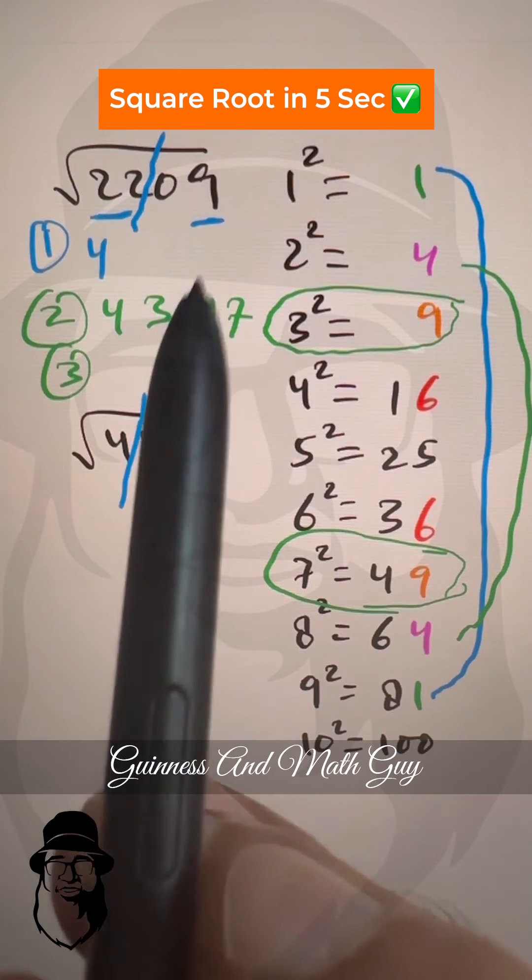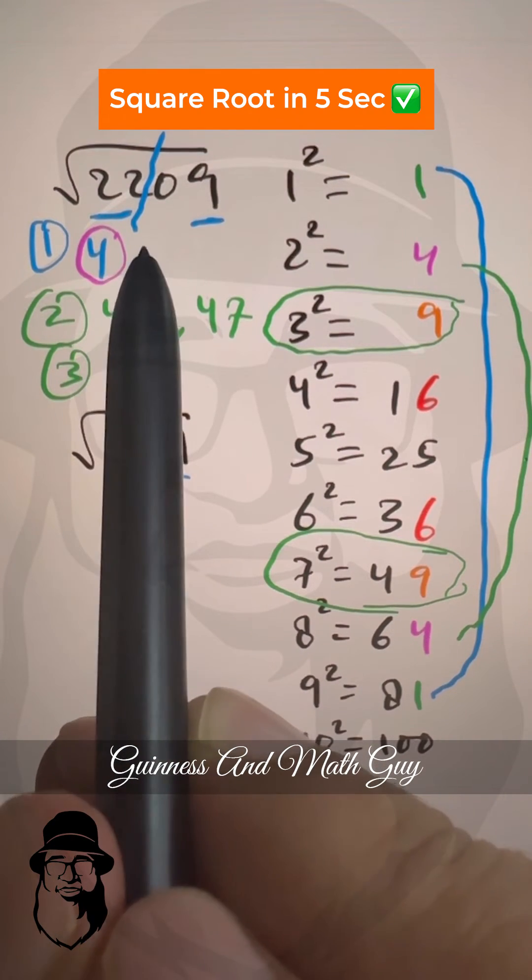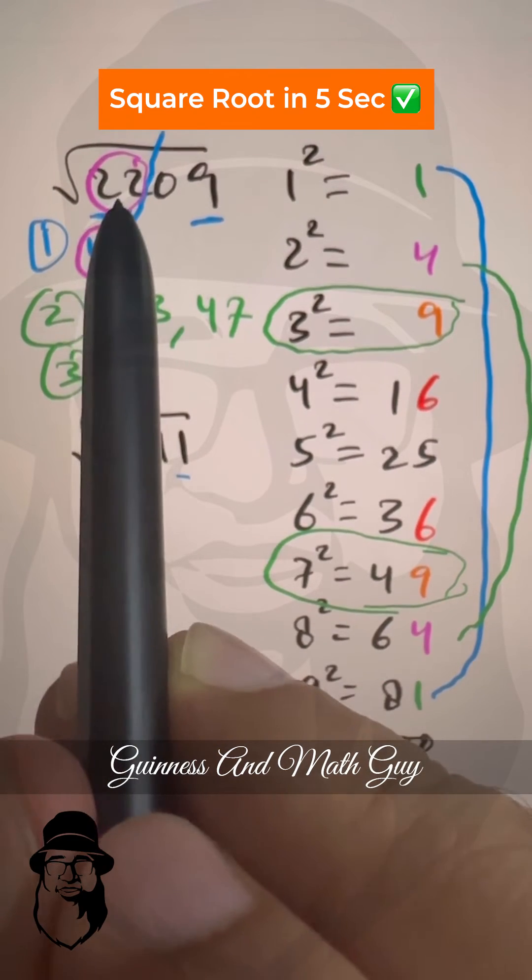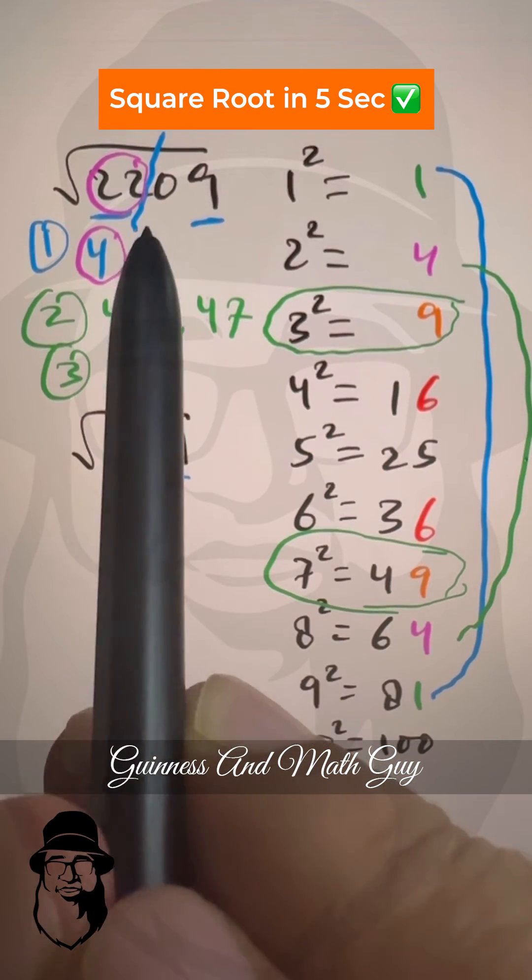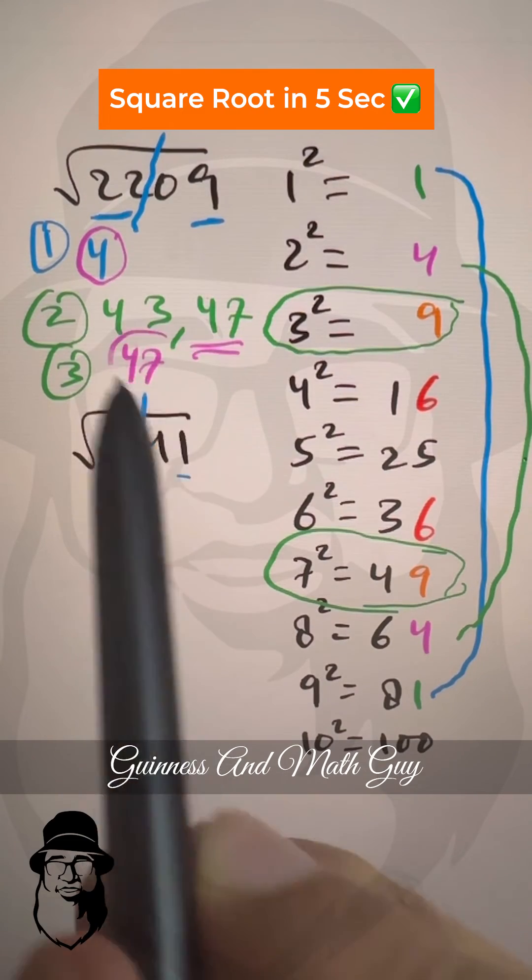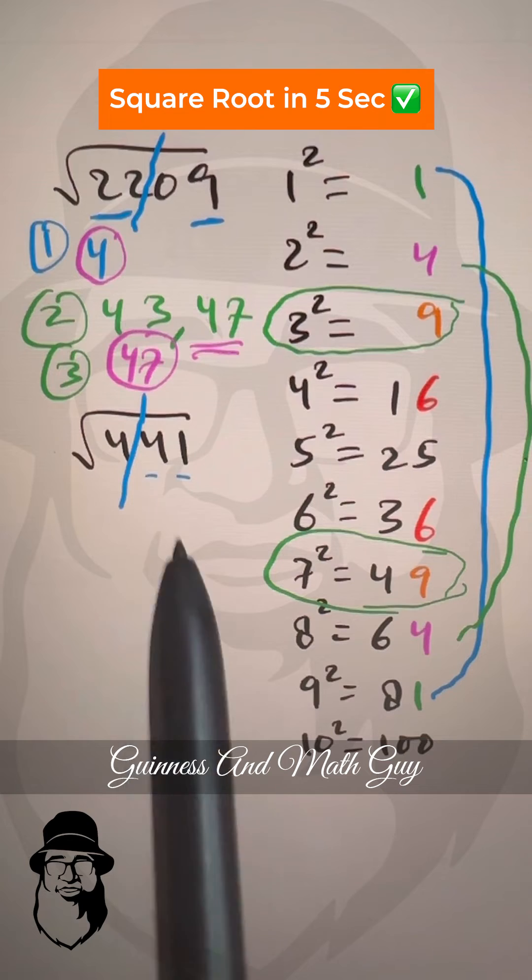We can just multiply this number by its next number. 4 times 5 is 20. We can see 22 is bigger. This 22 is bigger, so we take the bigger number here. 47 is our answer. You can check: 47 times 47 is 2209.